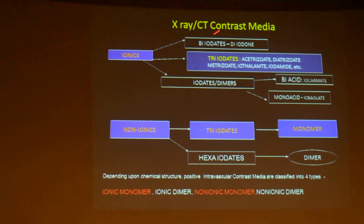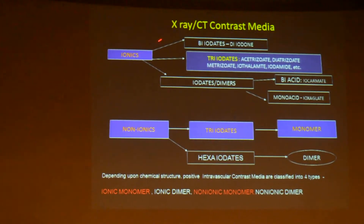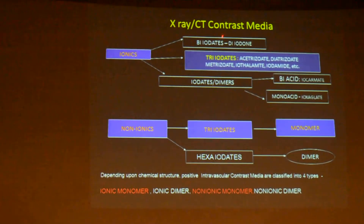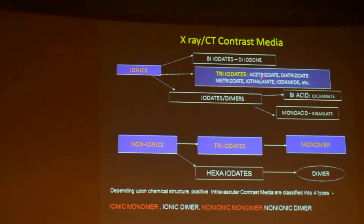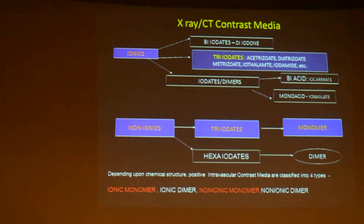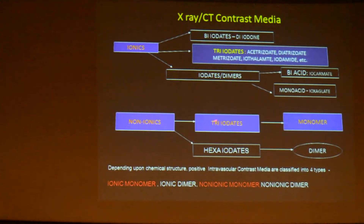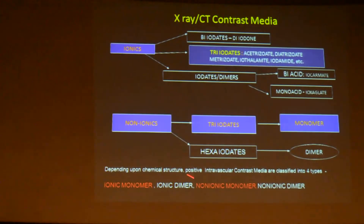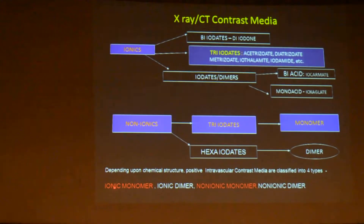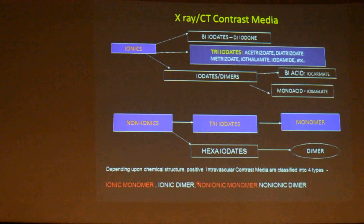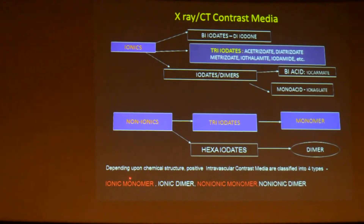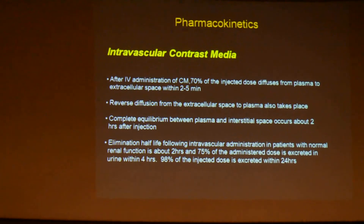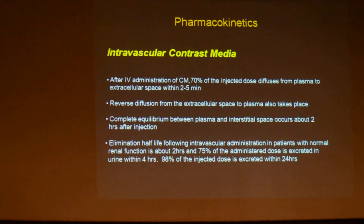Coming to the various types of contrast media we use in x-ray and CT, there are basically two types: ionics and non-ionics. Nowadays we use only non-ionics because of their safety. The ionics can be diiodates, triiodates, and dimers, but routinely what we use are the triiodates. For non-ionics, they are triiodates and hexaiodates. What we use today in practice are the triiodated monomers. To classify, we have both ionic and non-ionic which are monomers and dimers, but what we use today is ionic monomers and non-ionic monomers. Essentially, non-ionic is the safest contrast media to use today.